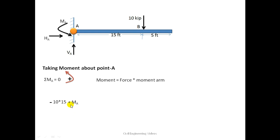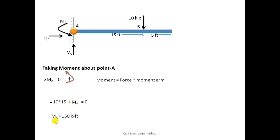MA is creating the counterclockwise moment about point A so it is taken as positive. Only these two moments are acting — VA and HA pass through point A so their moment arm is zero and they do not create any moment. MA is already a moment so we do not multiply it by a moment arm. Setting their sum to zero, we get MA equal to 150 kip·ft.